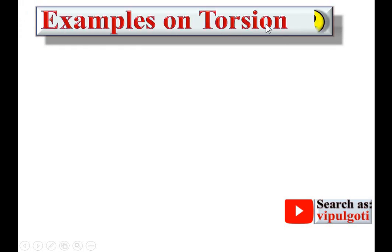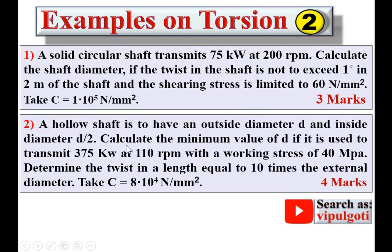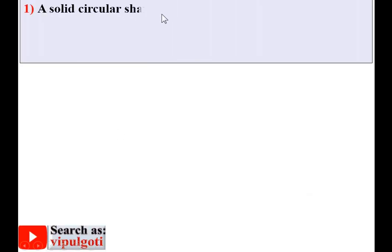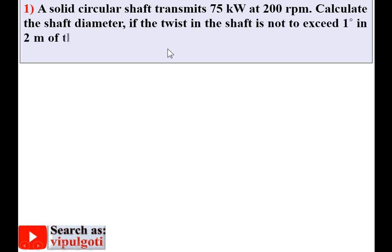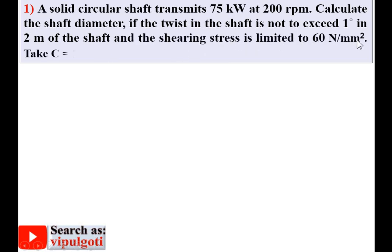Today we are going to discuss examples on torsion — or twisting moment — Part 2. In this session we are going to discuss two problems one by one. Problem 1: A solid circular shaft transmits 75 kW at 200 rpm. Calculate the shaft diameter if the twist is not to exceed 1 degree in 2 meters of the shaft, the shearing stress is limited to 60 N/mm² (60 MPa), and C (modulus of rigidity) = 1 × 10⁵ N/mm². The exam weightage for this problem is 3 marks.